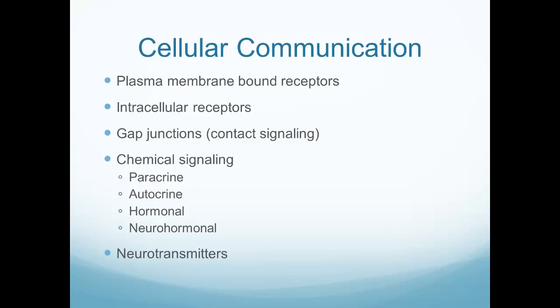One cell needs to communicate with another so we can tell our body parts what to do — even something as simple as lifting your hand involves a lot of cellular communication. It's also about communicating between different cells in the body to run functions we don't even think about, like hormonal functions and digestion. Our plasma membrane has receptors bound to it, and there are also intracellular receptors inside the cell.